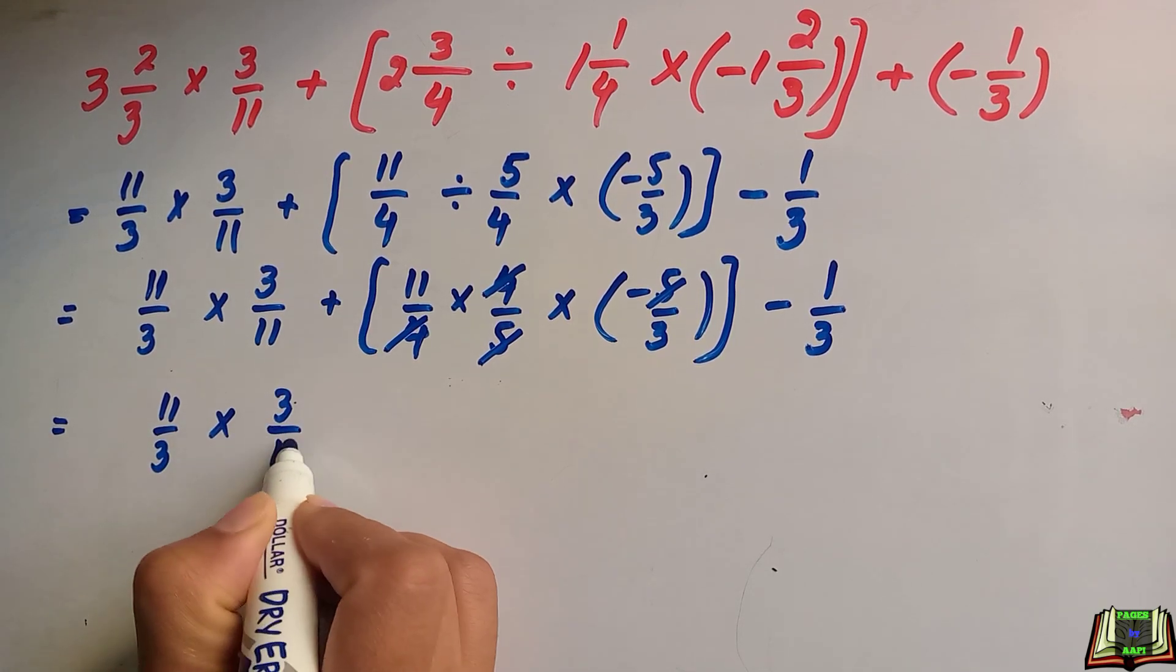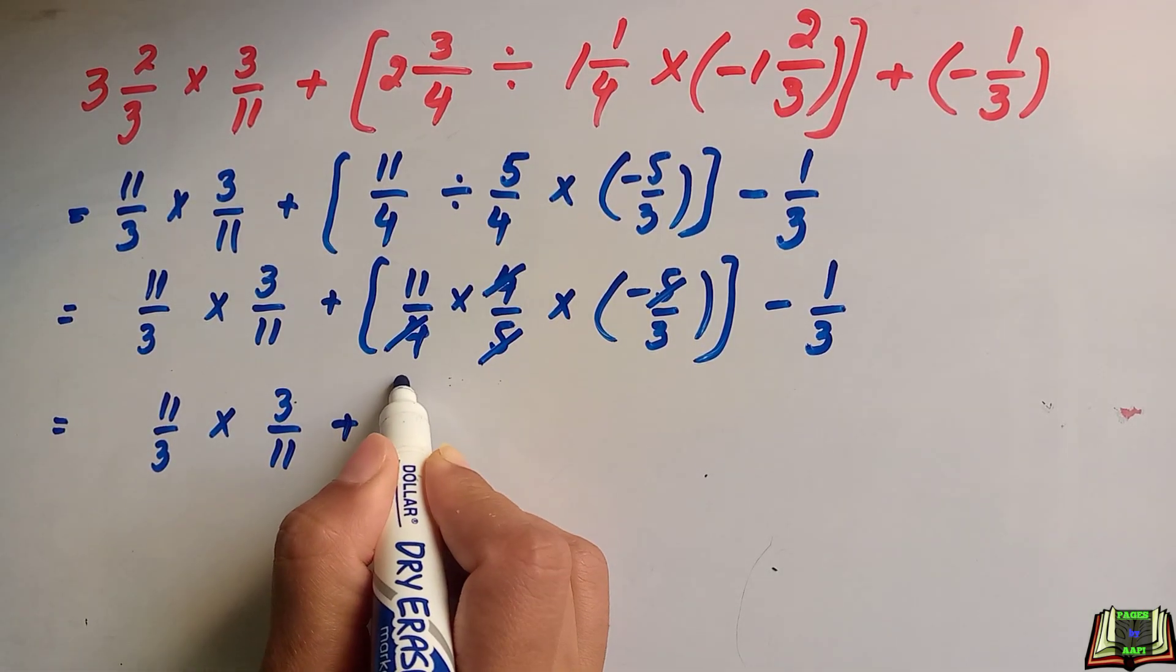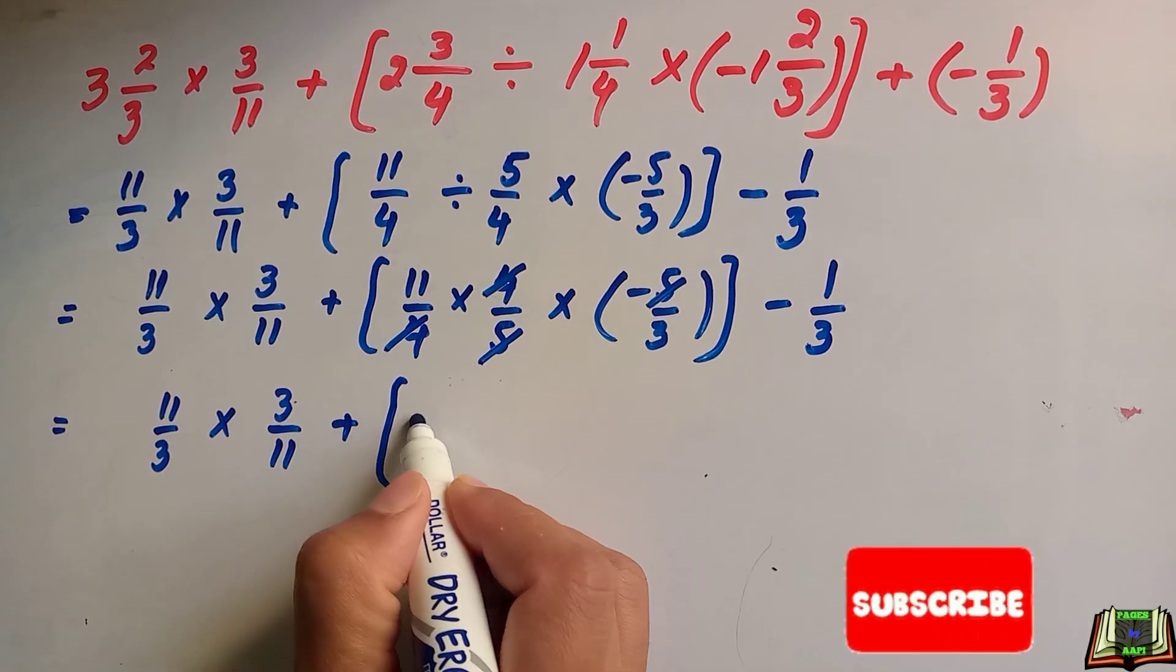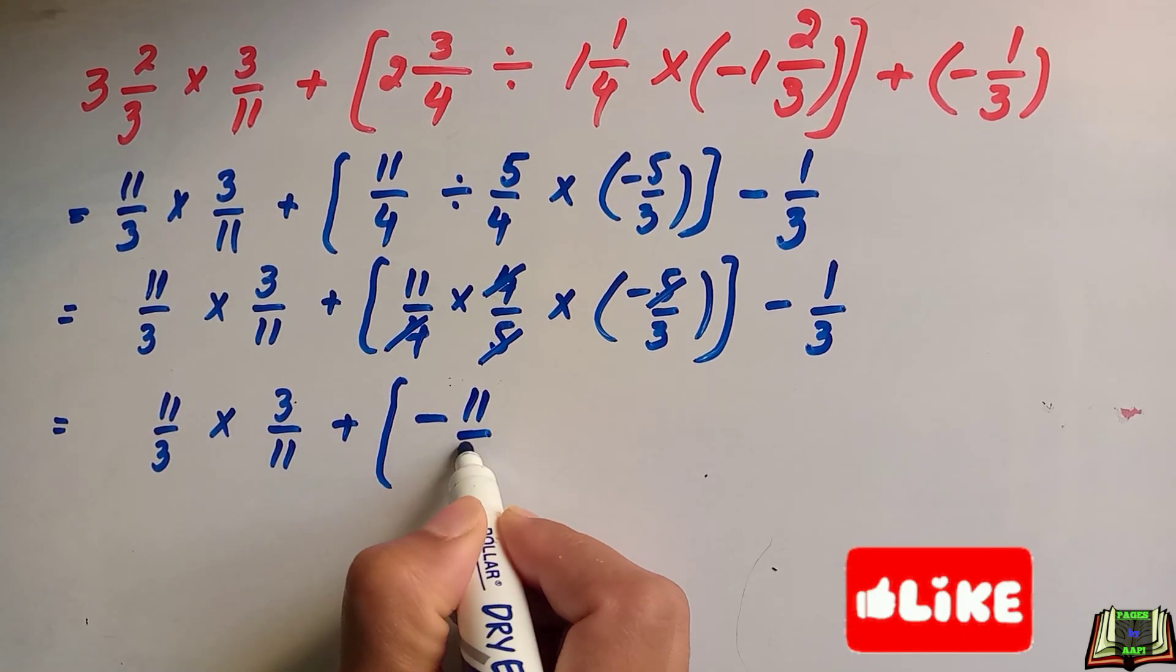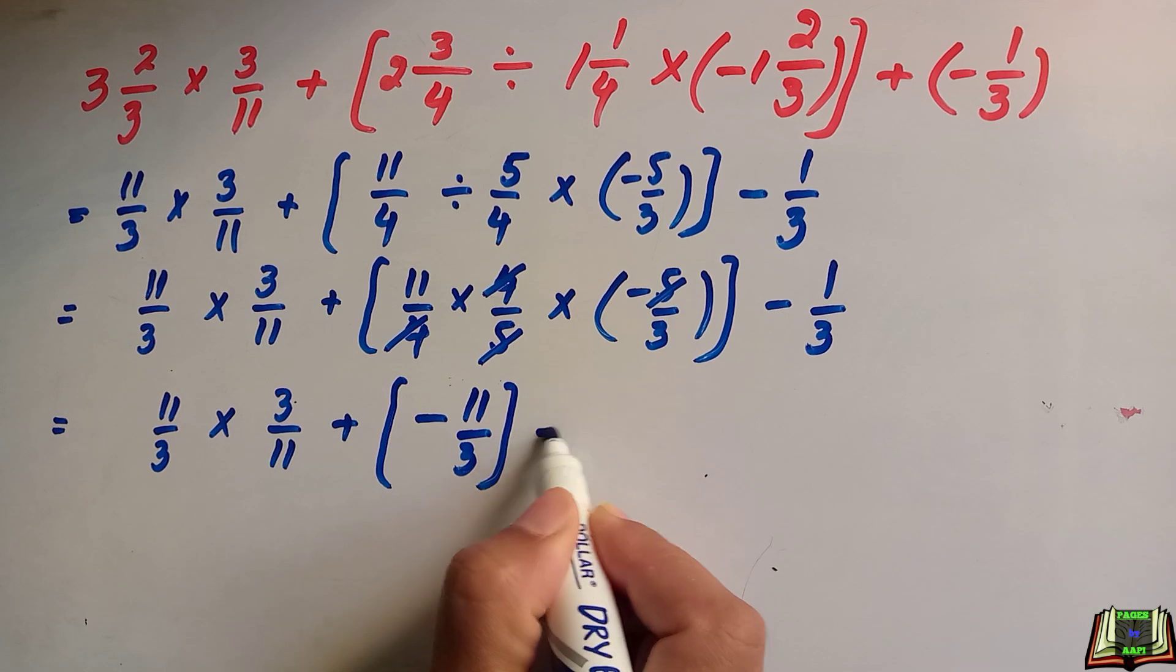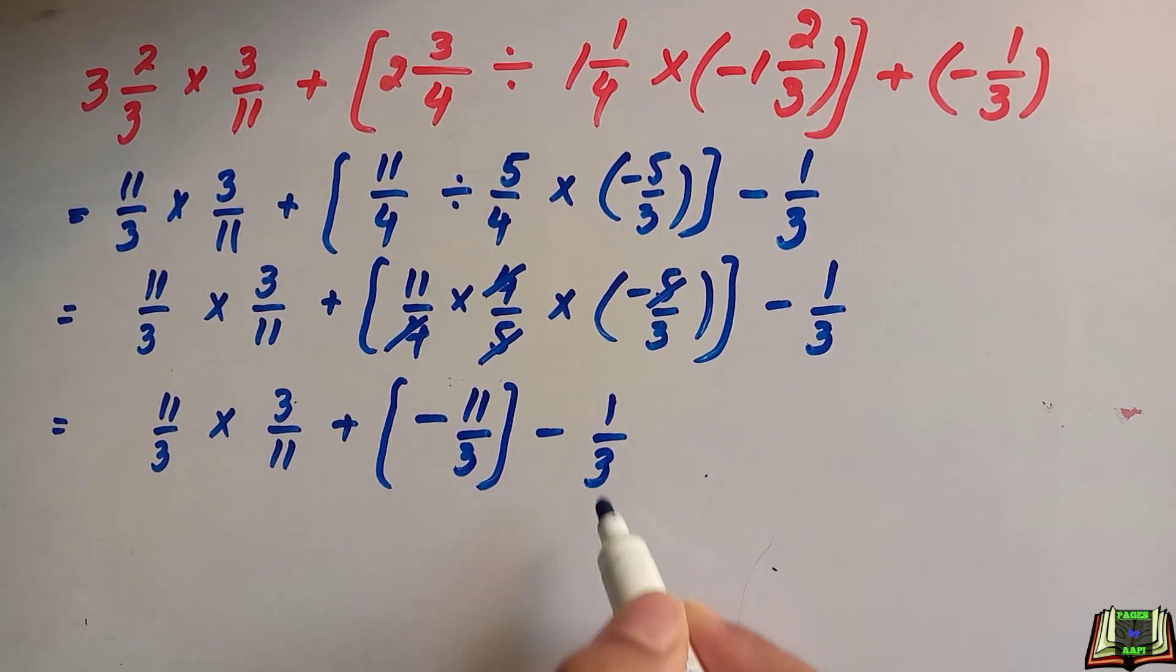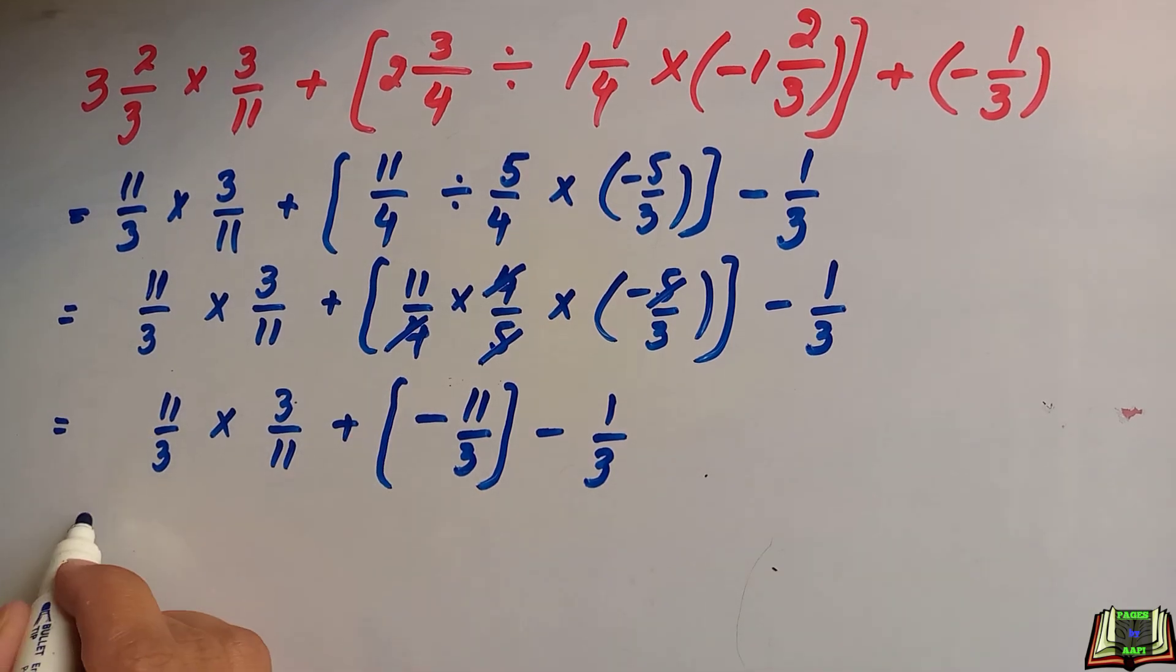We will finish this square bracket now and multiply the sign. 11 over 3 multiply by 3 over 11 plus, minus times minus is 11 over 3, minus 1 over 3.